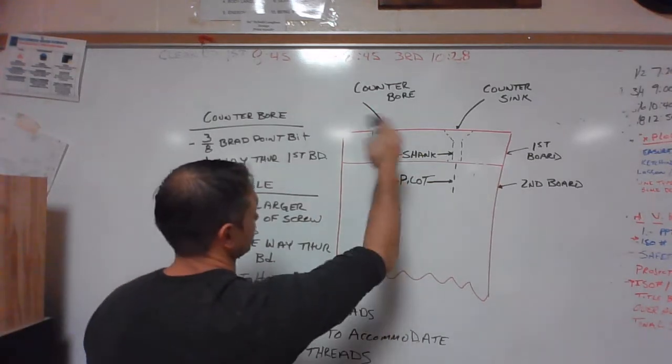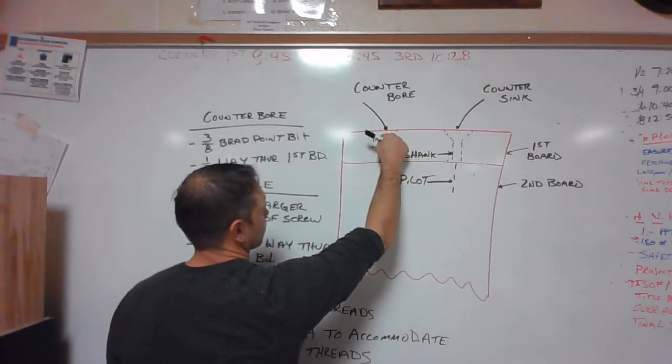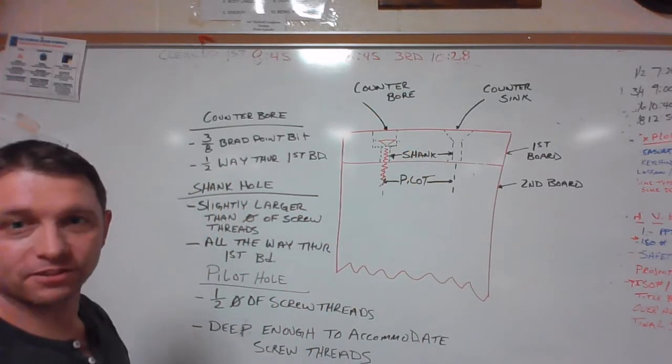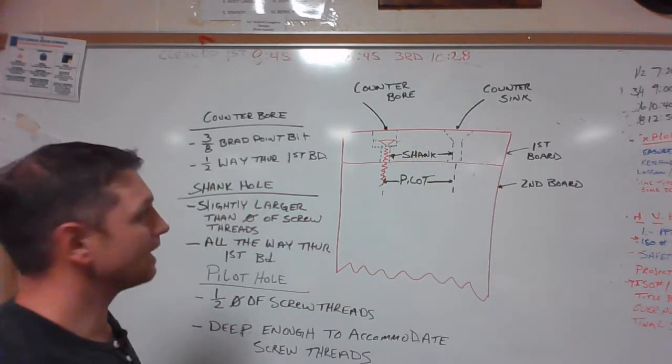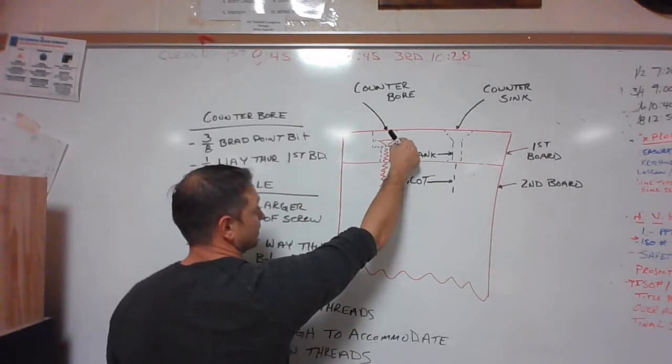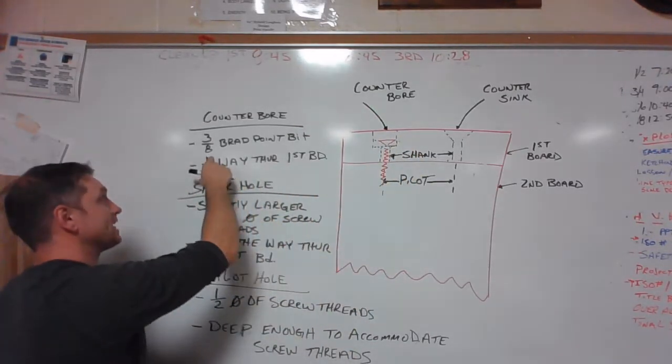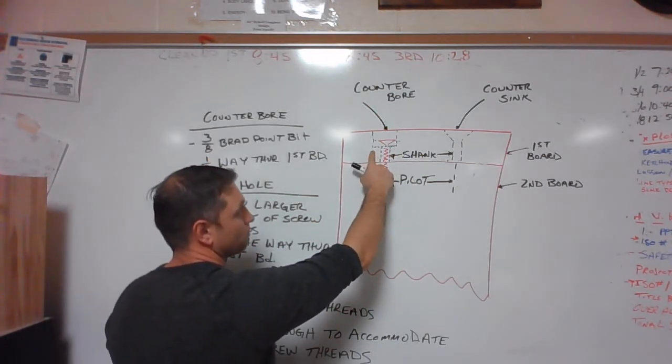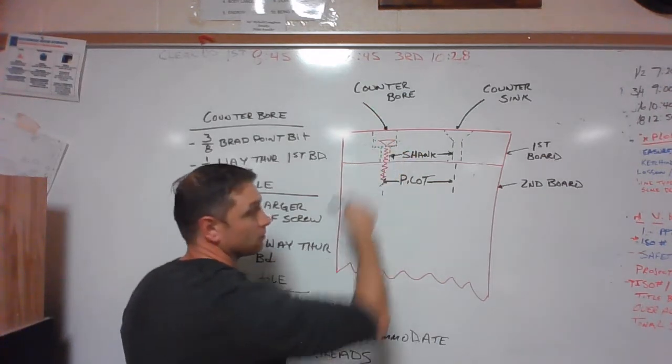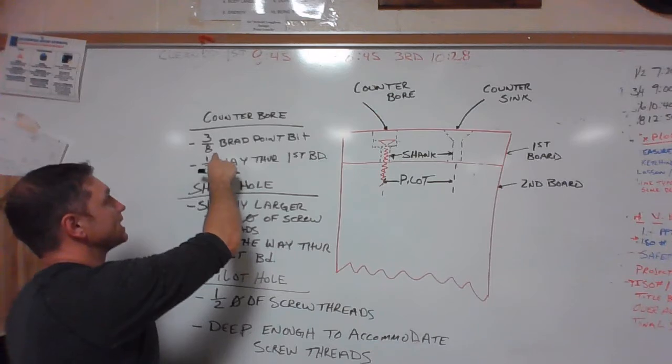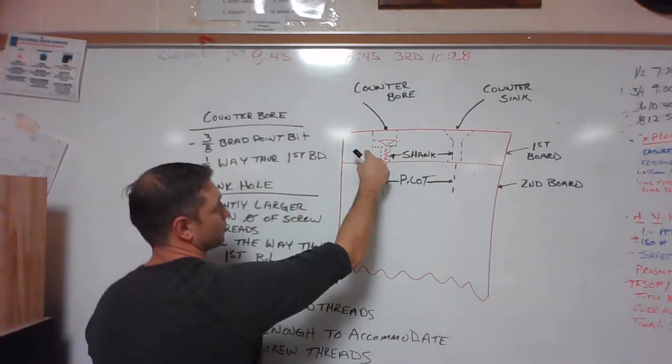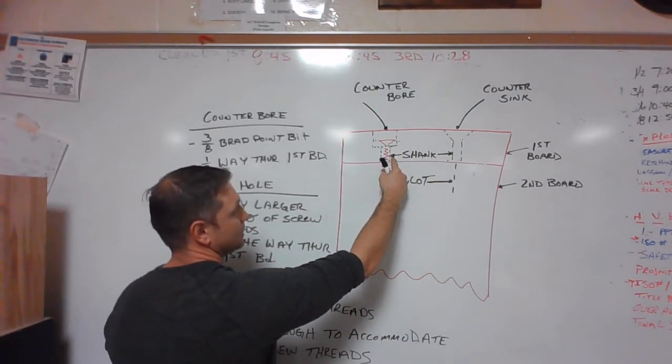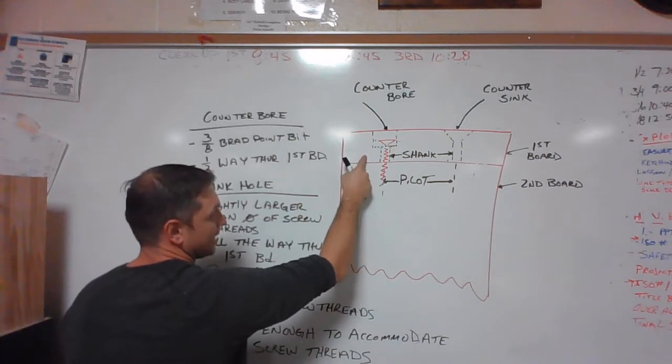So once again walking back through, this is a counter bore hole. We're going to drill this based on the size of plug that we're going to make. Common sizes of plugs are three eighths or half inch. Those are the plug cutters that we have here in the shop, so most commonly we're going to make this out of a three eighths or a half. The most common one is a three eighths. That's why we started with this. It's the only one we know an actual diameter to before we start the process because we know what plug we're going to fill it with. Once we drill that three eighths brad point bit halfway through, we then follow it up with the shank hole, which again is slightly larger than the diameter of the screw threads, all the way through the first board as the diagram shows.